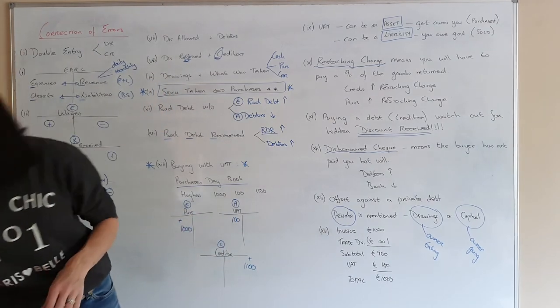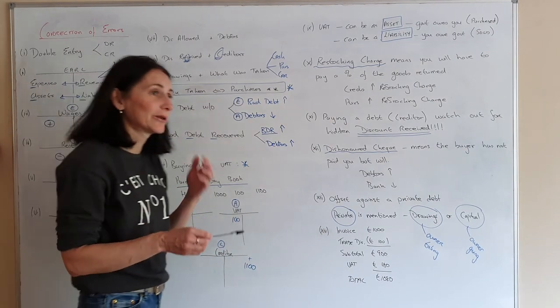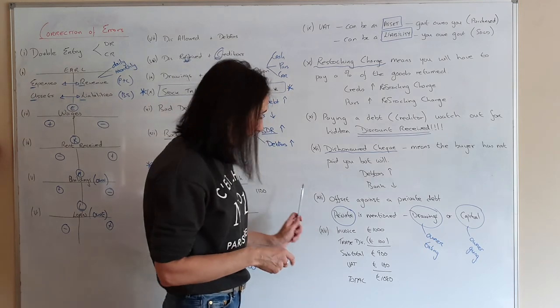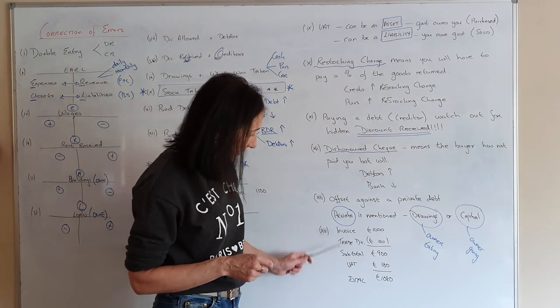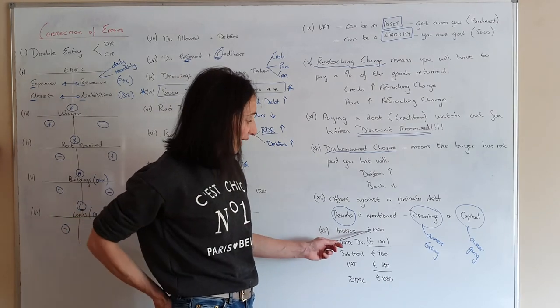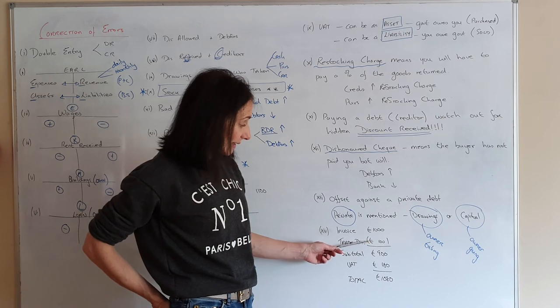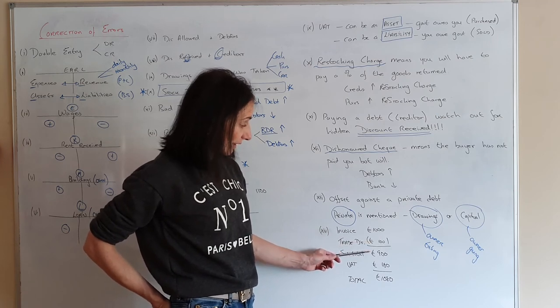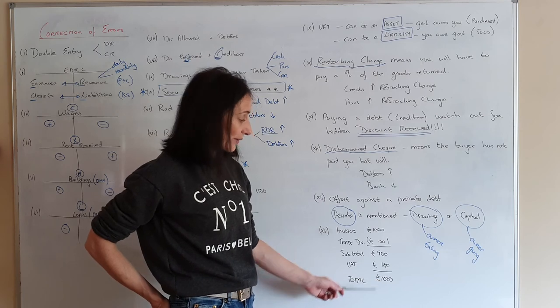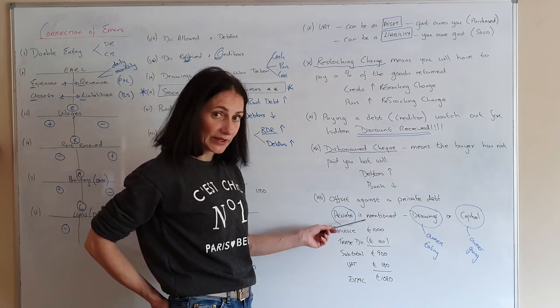Another thing that they've started to introduce. And again, to just make the course a little bit more difficult because people are getting so familiar with it. Remember this from your junior cert. You used to have to fill in an invoice. So you'd say the goods cost you 1000. You might get a trade discount. The subtotal is 900. VAT is 180. And the total amount is 1080. Just be aware of this.